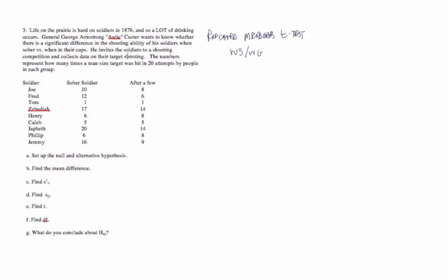So for this particular scenario, we have a shooting contest with soldiers who are either sober or who've had a few drinks. And so, we'll start by setting up the null and alternative hypothesis. The null hypothesis is going to be that the mean difference is equal to zero. The alternative hypothesis that the mean difference is not equal to zero.